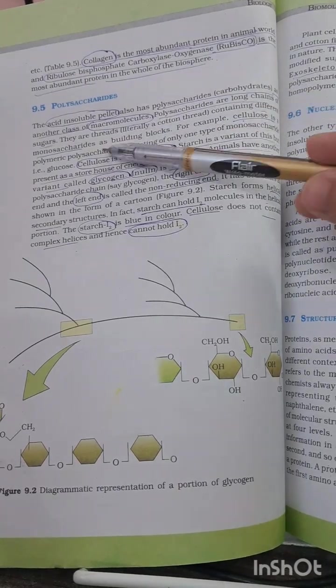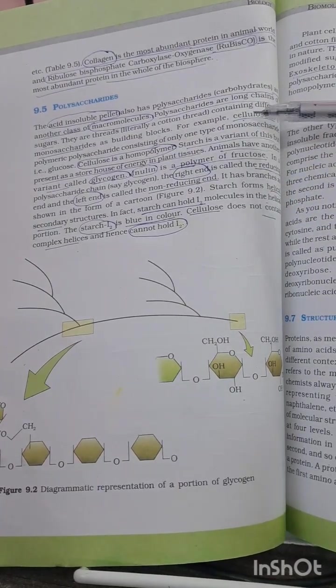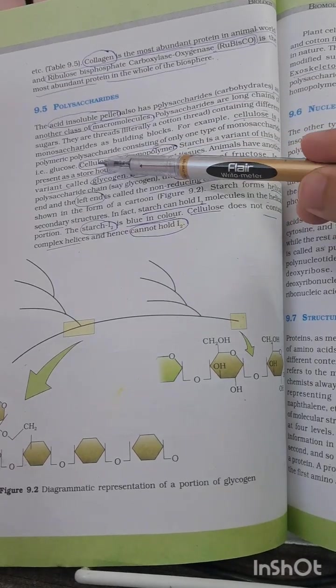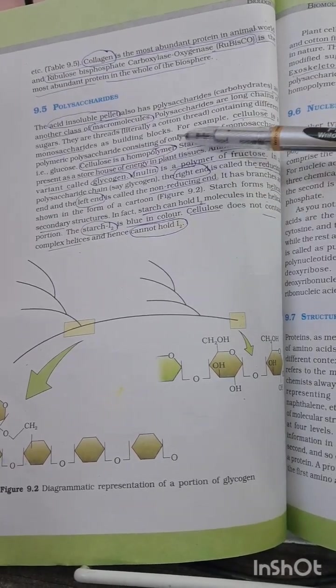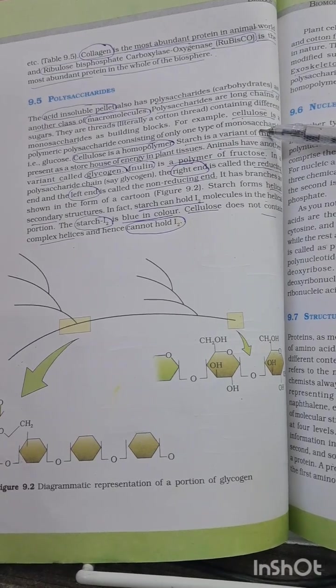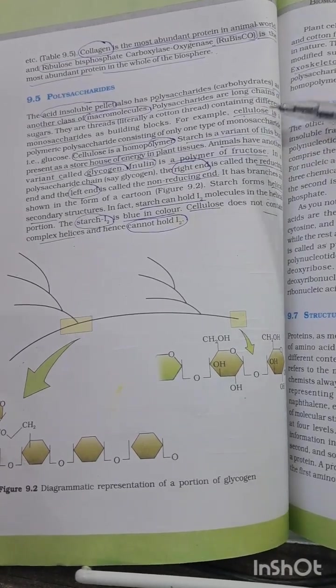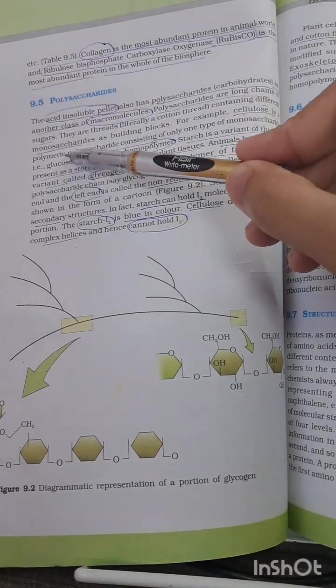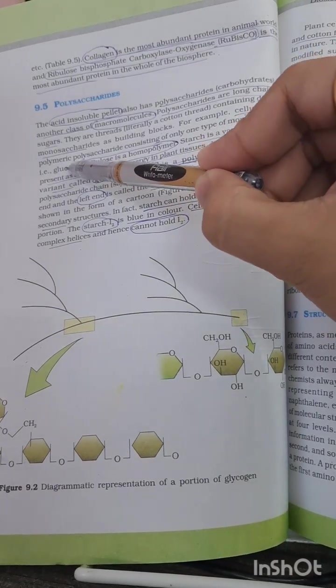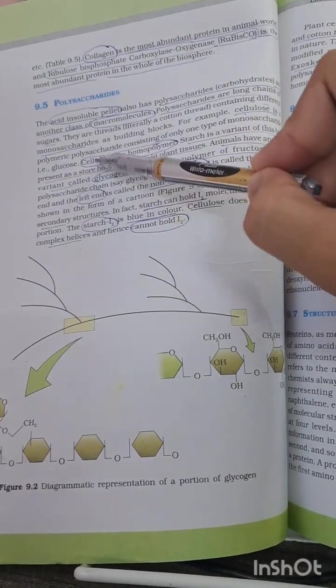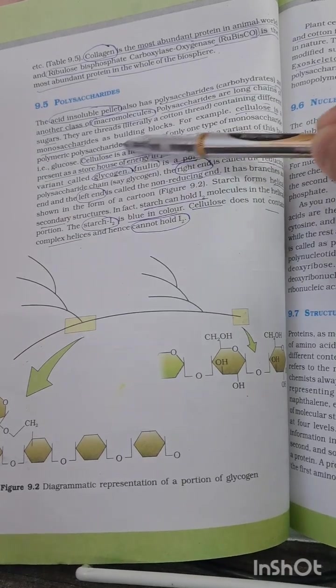They are traits containing different monosaccharides as building blocks. For example, cellulose is a polymeric polysaccharide consisting of only one type of monosaccharide. As I mentioned in earlier videos, that is glucose. Glucose is the monomer present here, hence cellulose is a homopolymer. Only one type of monomer is repeating.